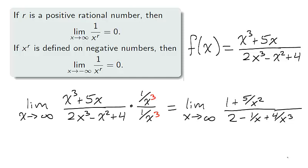We distribute 1 over x cubed throughout the numerator and the denominator, and the expressions circled in red approach 0 as x approaches infinity. Therefore, the limit of the rational function f is 1/2.